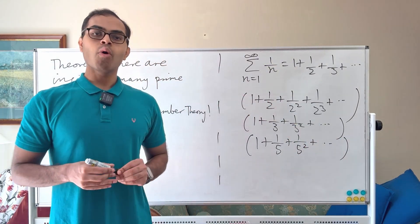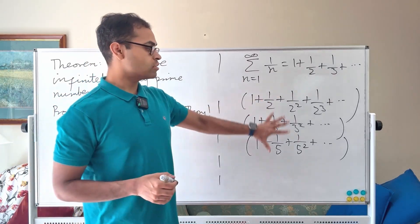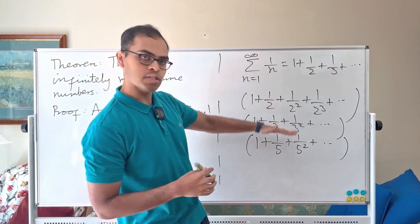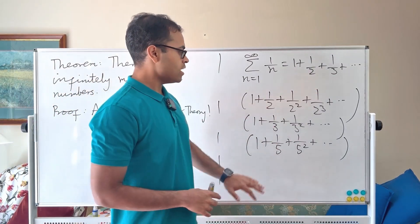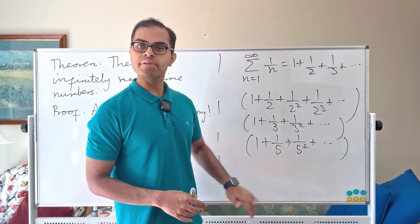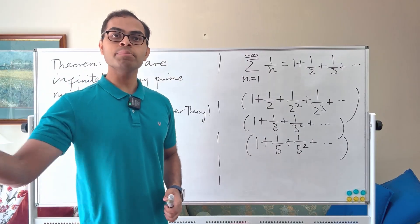Now here's the thing. What does the term of this product look like? If you expand out this product how does it work? You use distributivity. So basically we pick a term here. We pick a term here. Pick a term here etc. And we go on multiplying them.